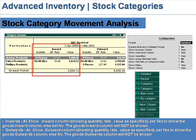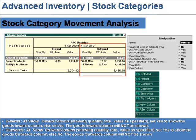At Inwards, show the inward column displaying quantity, rate, and value as specified. Set Yes to show the goods inward column, else set No and the goods inward column will not be shown. At Outwards, set Yes to show the goods outward column, else set No and the goods outward column will not be shown.